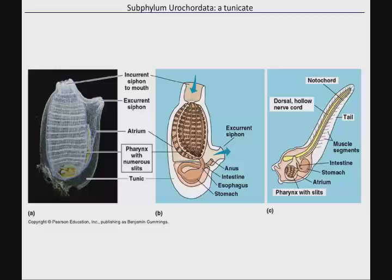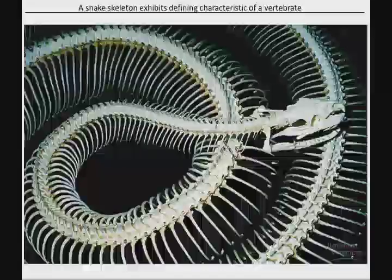Vertebrates have a backbone and a skull. Think about segmentation — think about the number of vertebrae, that repeating body plan that we see in annelida. We can certainly see that here when you look at a skeletal system, in this case of a snake.